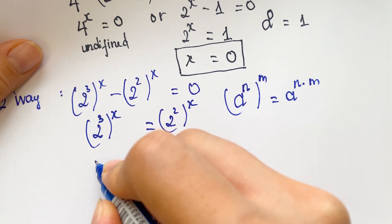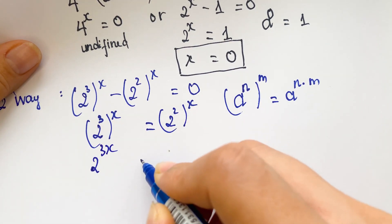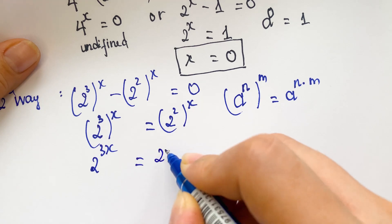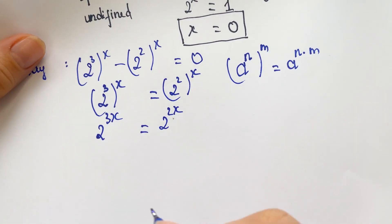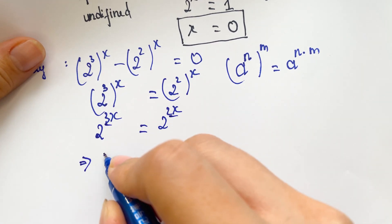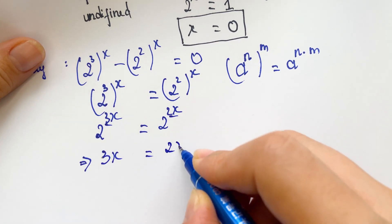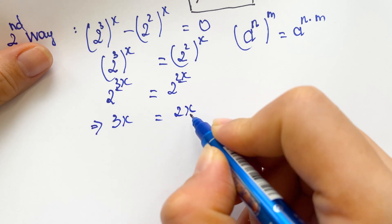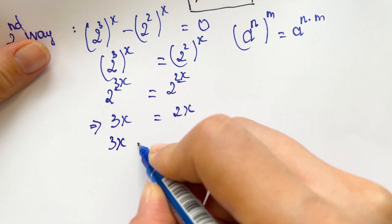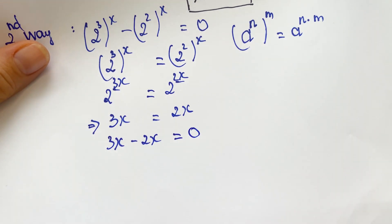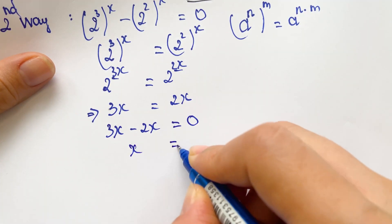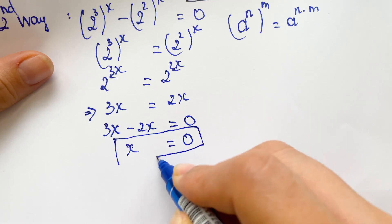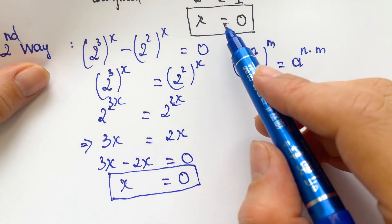Applying that rule, we get 2 power 3x is equal to 2 power 2x. So we have 3x equal to 2x, and therefore 3x minus 2x is equal to 0, giving us x equal to 0. This is the same value as the first way — x is equal to 0.